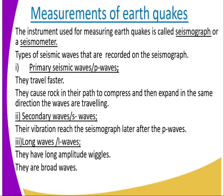Starting with the primary waves — they travel faster, so they will reach the seismograph faster than the other waves. They cause the rock in their path to compress and expand in the same direction their waves are traveling. The secondary waves are slower than the primary waves. The reason they are referred to as secondary waves is because they reach the seismograph later after the primary waves.